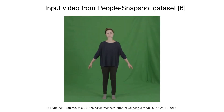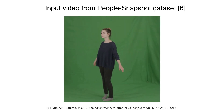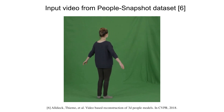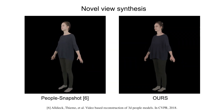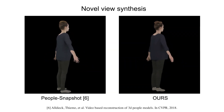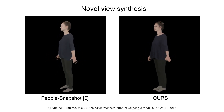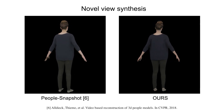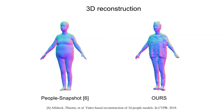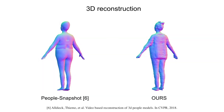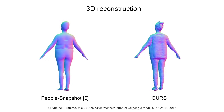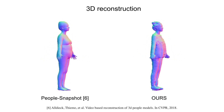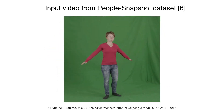Our method is also able to reconstruct moving humans from monocular videos. The People's Snapshot dataset captures humans that rotate while holding a pose. Our method renders more appearance details than the method proposed in People's Snapshot, and compared with it, our method also produces more detailed human geometry. We also show the comparison on another monocular video.